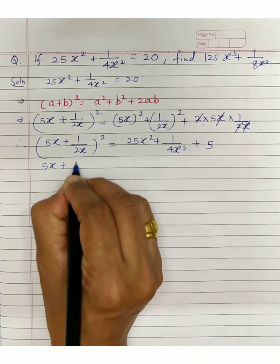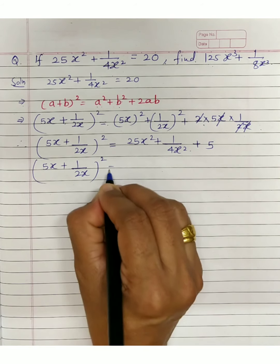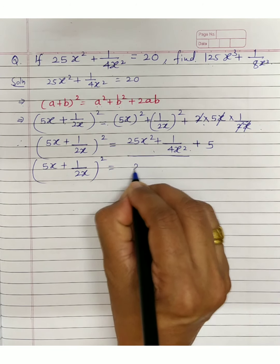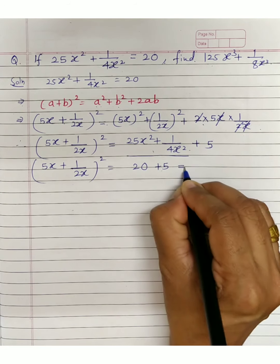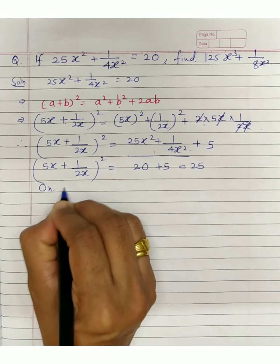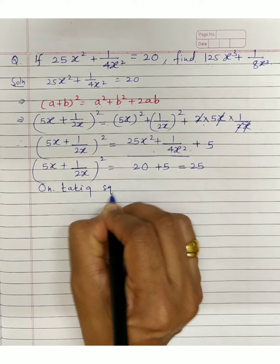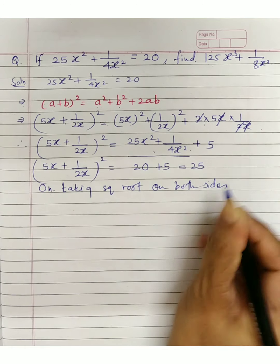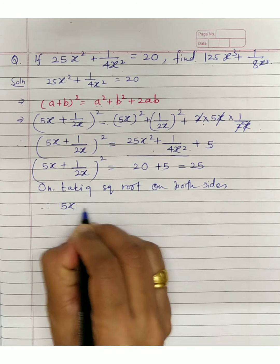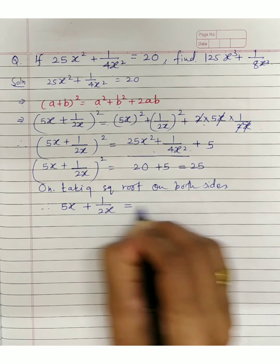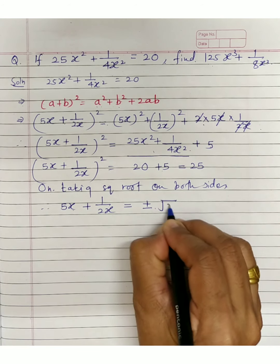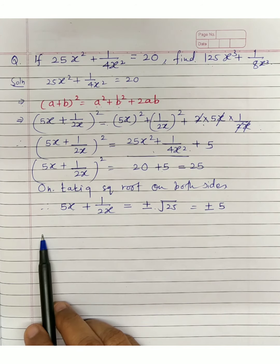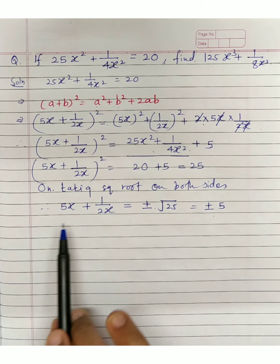So (5x + 1/(2x))² equals 25x² + 1/(4x²) + 5. We replace 25x² + 1/(4x²) with 20, giving 20 + 5 = 25. Taking square root on both sides — remember when taking square root you must take the plus-minus sign — we get 5x + 1/(2x) = ±5.